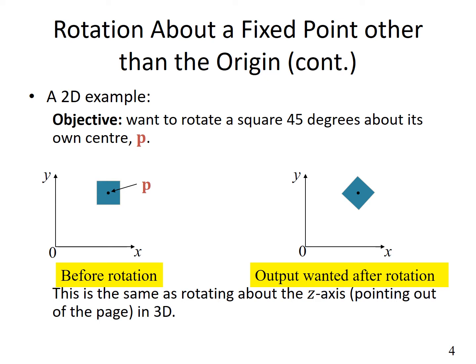Let's look at a 2D example of rotation about an arbitrary point that is not the origin. We want to rotate this square about its center of gravity, which is point P. Before rotation we have the square like this, and after rotation we have the square like this. This is different than rotating the whole square and ending up in the same orientation somewhere else, which would be rotation about the origin.